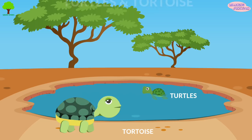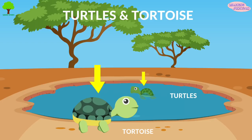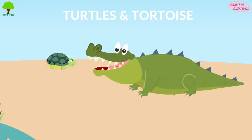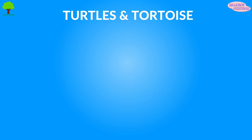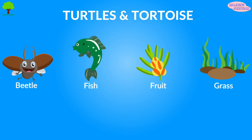Turtles and tortoises belong to one of the oldest reptile groups in the world. They are easily recognized by their bony cartilaginous shell, which acts like a shield to protect them from predators. Some turtles can even tuck their head inside their shell for additional protection. They eat beetles, fish, fruit, and grass, and have an incredibly long lifespan.